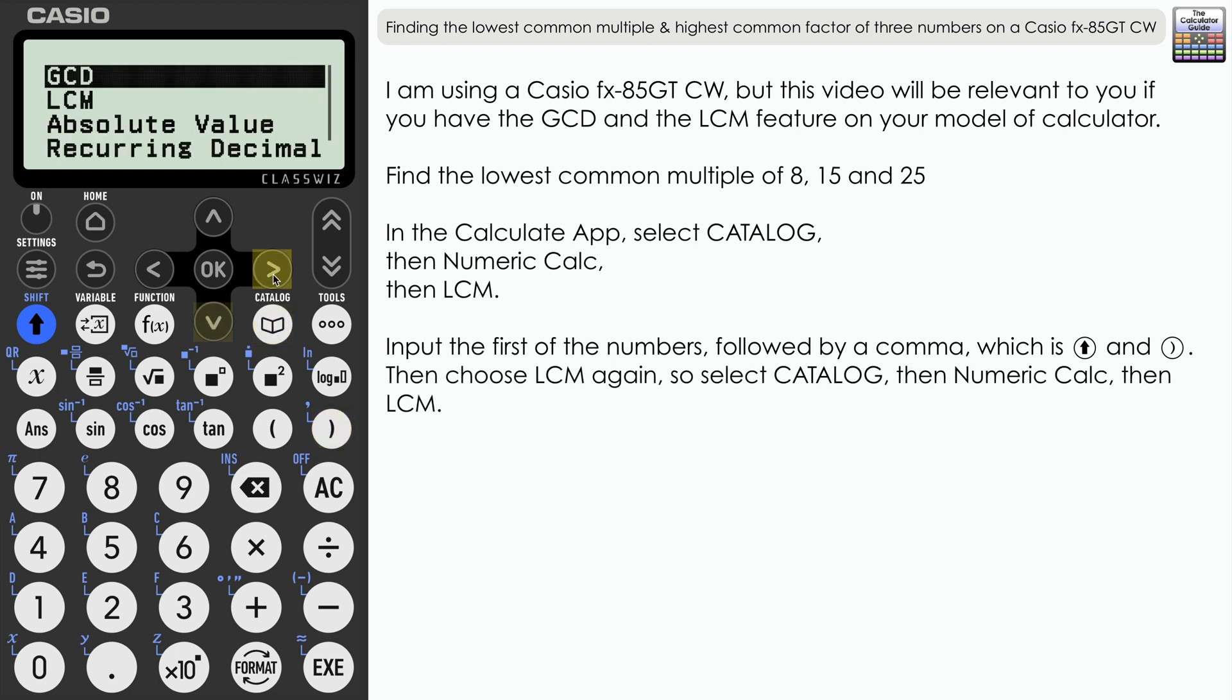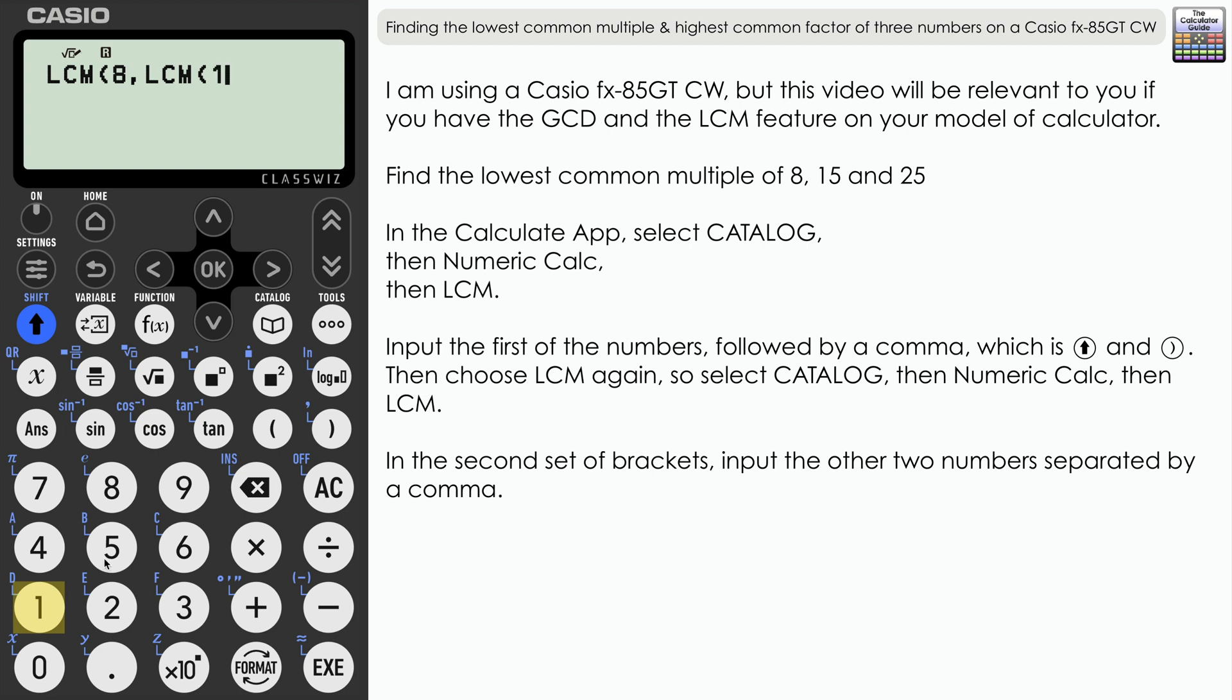So it's Catalog, Numeric Calc, and then LCM. So we've got LCM(8, LCM and then in the brackets what we want to do is to put the other two numbers that we have: 15 comma 25. And then we want to close two sets of brackets or parentheses there.